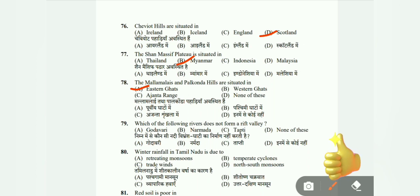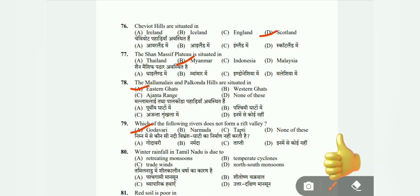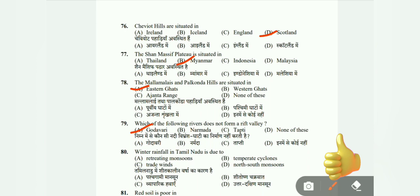Question 79: Which of the following rivers does not form a rift valley — Godavari, Narmada, Tapi, or none of these? The correct answer is Godavari. Question 80: Winter rainfall in Tamil Nadu is due to — retreating monsoon, temperate cyclones, trade winds, or north-south monsoon? The correct answer is retreating monsoon.